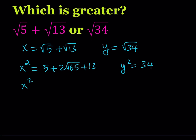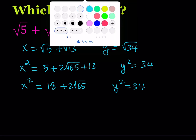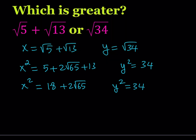Let's combine like terms. x squared becomes 18 plus 2 times the square root of 65, and y squared is 34. Now how do you compare these two numbers? Here's what I want you to notice: we have 2 times the square root of 65.